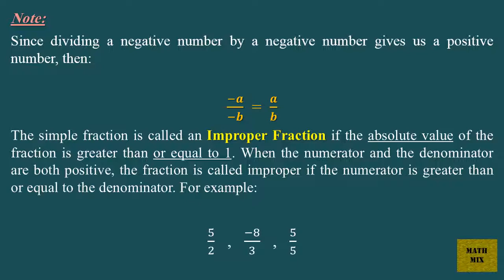A simple fraction is called an improper fraction if the absolute value of the fraction is greater than or equal to 1. When the numerator and the denominator are both positive, the fraction is called improper if the numerator is greater than or equal to the denominator. For example, 5 over 2, minus 8 over 3, and 5 over 5.